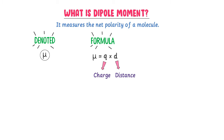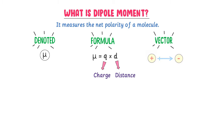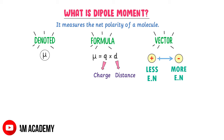Also remember that dipole moment is a vector quantity. Its direction is always from positive charge to negative charge, or we can say that its direction is from the less electronegative atom towards the more electronegative atom.